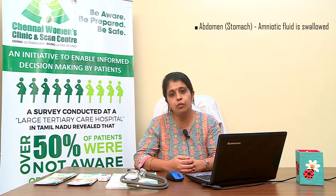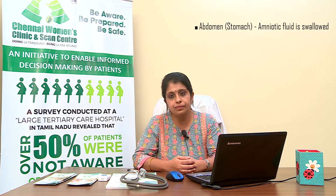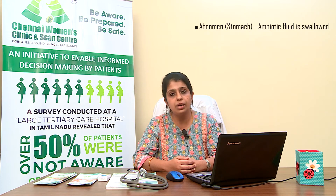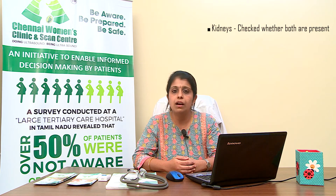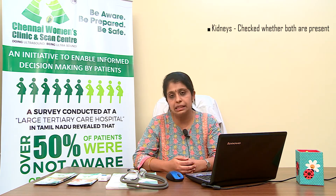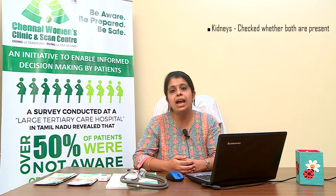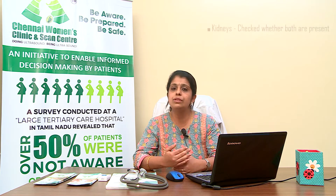Once we check the heart, the lungs are also checked in the chest. Then coming down to the abdomen, we check for the stomach. The stomach is usually visualized like a cystic structure because once the baby swallows the amniotic fluid, the stomach gets filled up. We also check for the two kidneys — whether they are in the right position — and then the intestines and bladder.